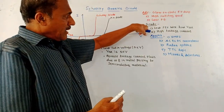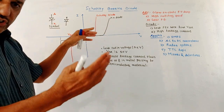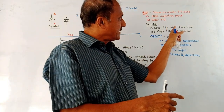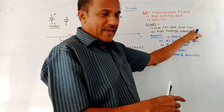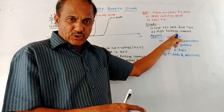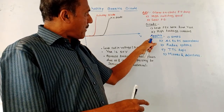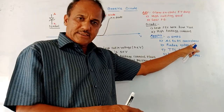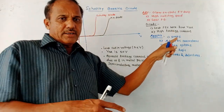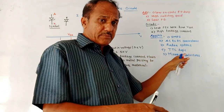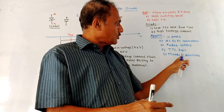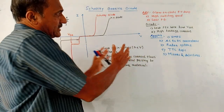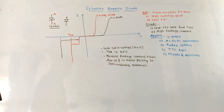Disadvantages: the breakdown voltage (VBR) is less compared to the normal PN Junction Diode, because of which the PIV rating is low. There is also a high leakage current. Applications include SMPS (switched mode power supply), AC to DC converters, radar systems, TTL logics used in computer systems where it acts as a switch, and mixers and detectors for communication systems.